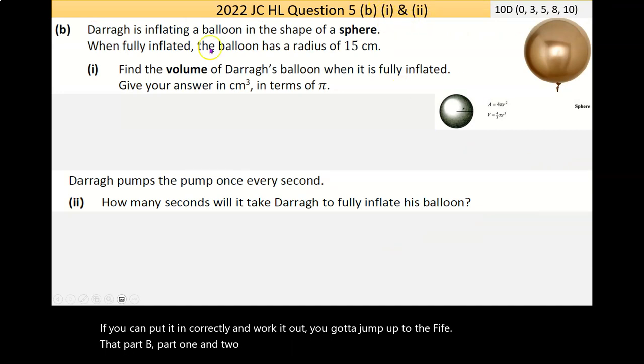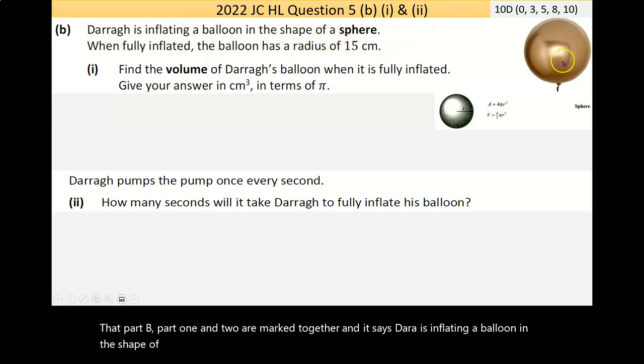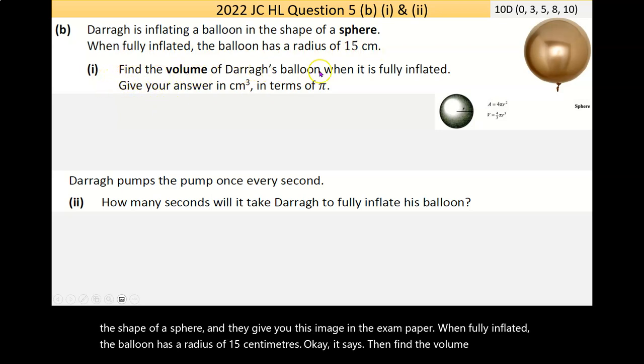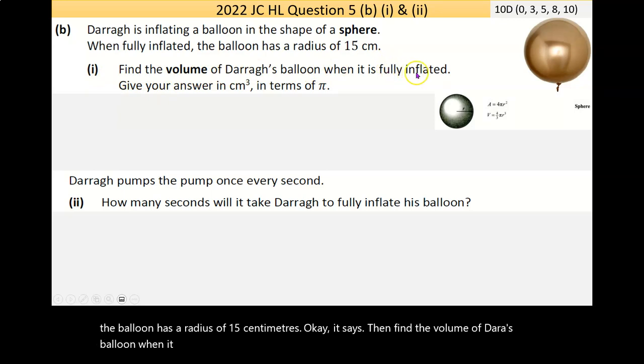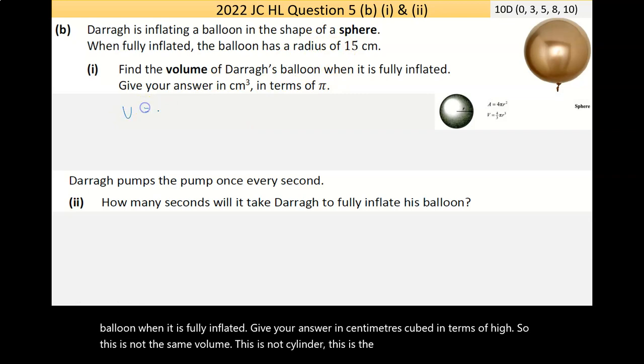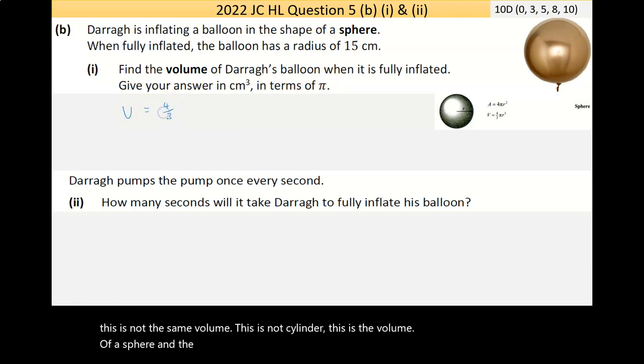Part 1 and 2 are marked together. Dara is inflating a balloon in the shape of a sphere. When fully inflated, the balloon has a radius of 15 centimeters. Find the volume of Dara's balloon when it is fully inflated. Give your answer in centimeters cubed in terms of pi. This is not a cylinder, this is the volume of a sphere. The formula for that is 4 over 3 times pi times r to the power of 3.